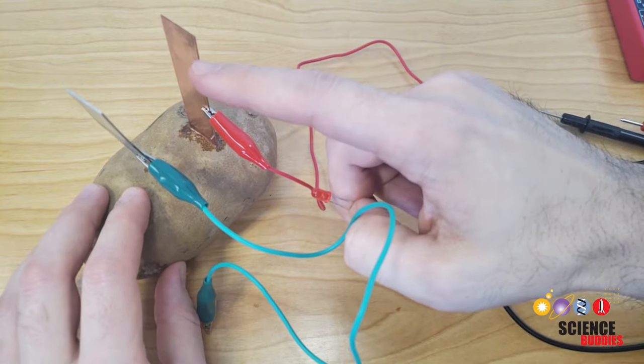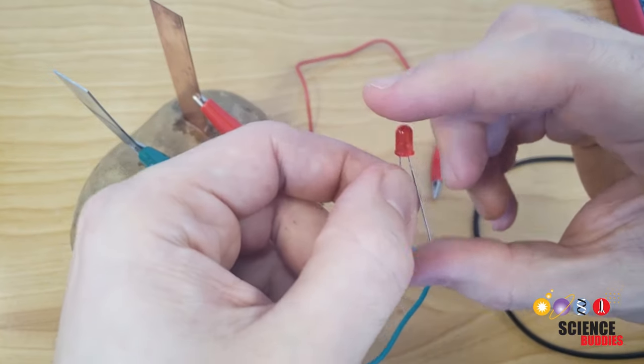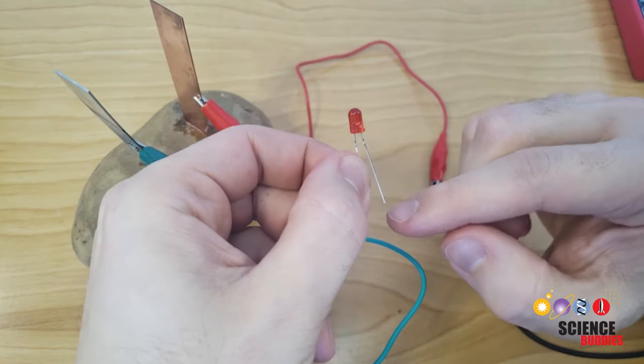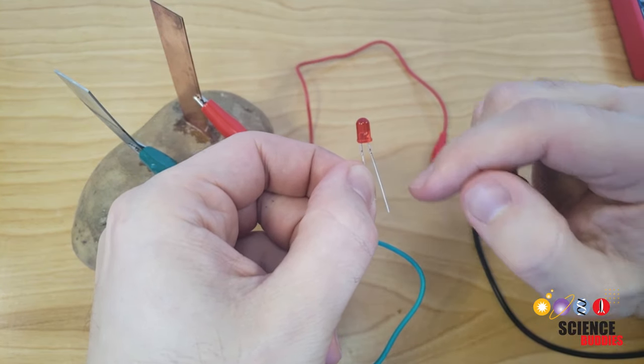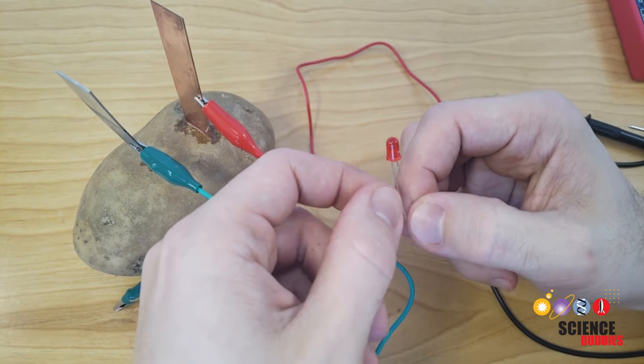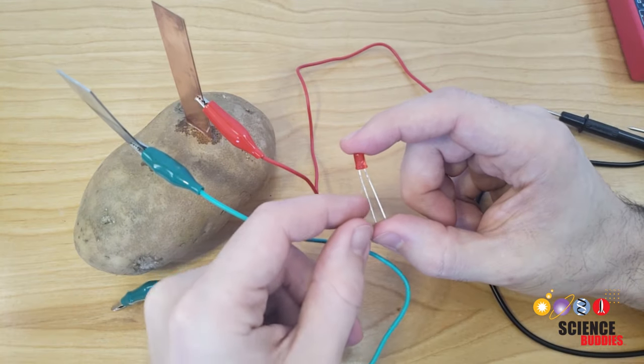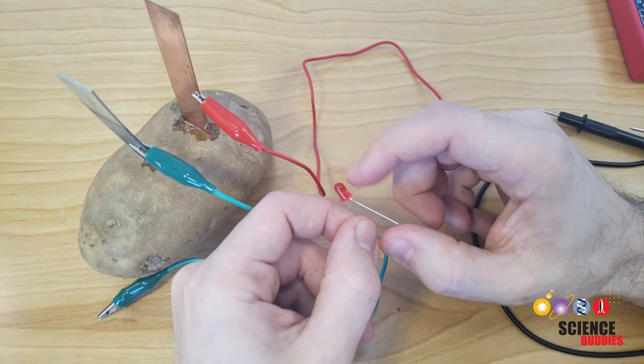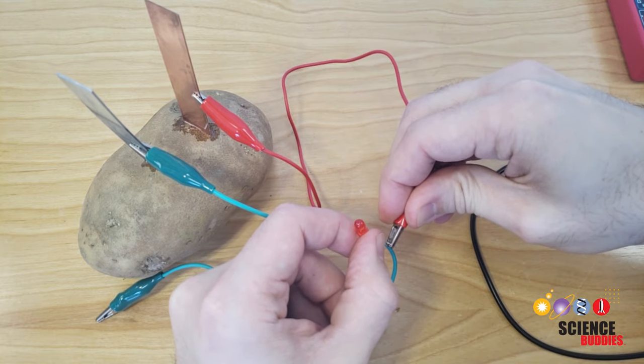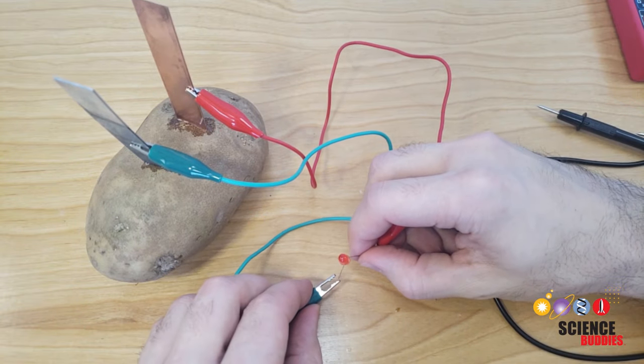So remember that for the battery, the copper is the positive side and the zinc is the negative side. And if you look very closely at the LED, you will notice that one of the legs is slightly longer than the others. So the longer leg of the LED is the positive side. Current only flows through LEDs in one direction. They act sort of like a one-way valve for electrical current. So if you hook an LED up backwards, it's not going to work at all. So I need to make sure I hook the longer leg of my LED up to the positive side of the battery and the negative leg of the LED up to the negative side of the battery.